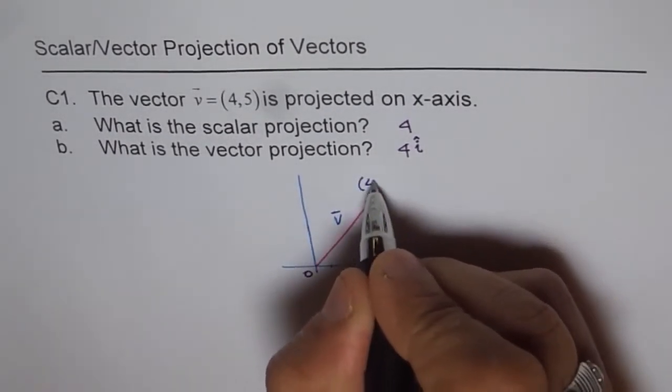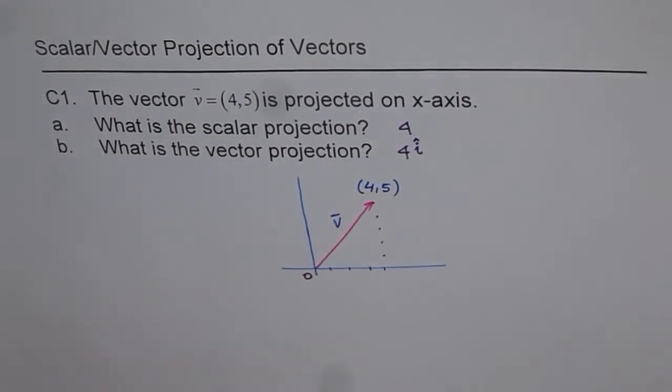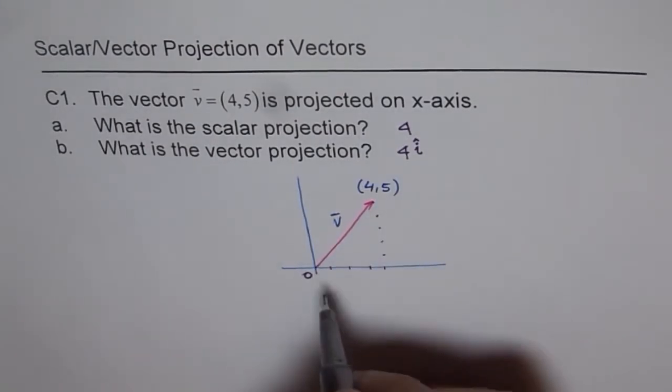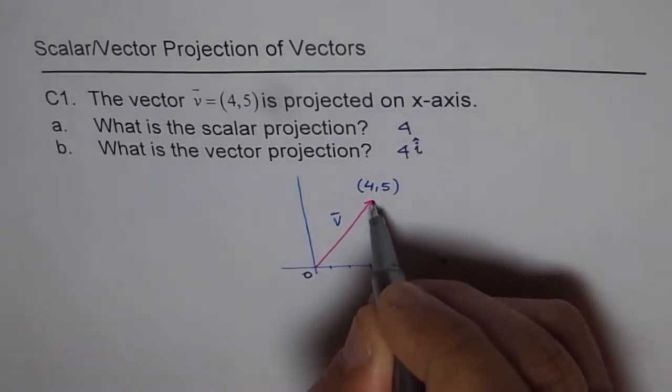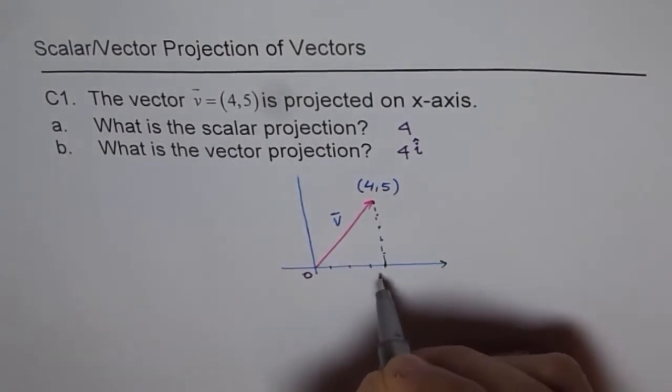Now when we say vector V is projected on x-axis, then literally we are saying component of vector V along x-axis. So we drop a perpendicular from here and find where it falls, so in this case it will be at 4.